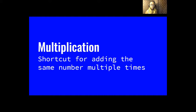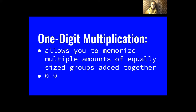With multiplication, we have to do a lot of memorization, especially of our one-digit numbers. One-digit multiplication allows us to memorize multiple amounts of equally sized groups that are added together. For numbers from zero to nine, we actually have to memorize those multiplication facts, like five times seven or nine times six. If we don't memorize them, then we'll be stuck adding.